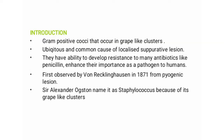In this video we will discuss the bacterial species Staphylococcus aureus. Staphylococcaceae are gram-positive cocci that occur in grape-like clusters — they are rounded in shape and arranged in grape-like structures.